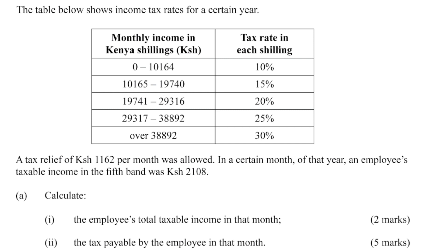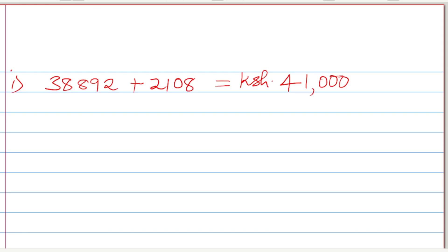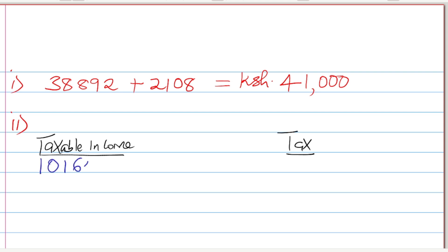Part two: tax payable by the employee in that month. For this part, we go to each of the bands, from the first to the fifth, and calculate the tax. The first band is from 0 to 10,164. The tax rate is 10%. The amount in the first band is 10,164, and 10% of that gives 1,016.40. That is the tax in the first band.